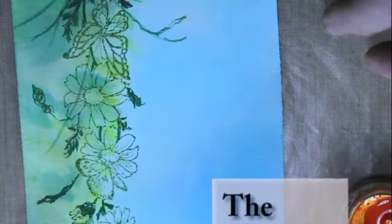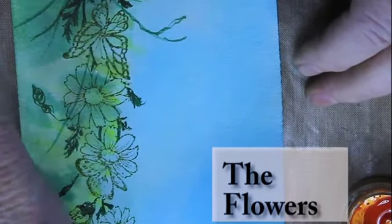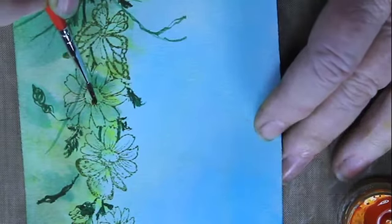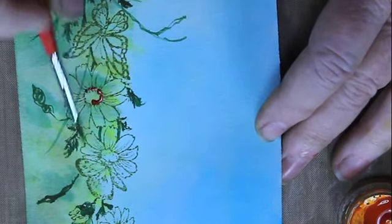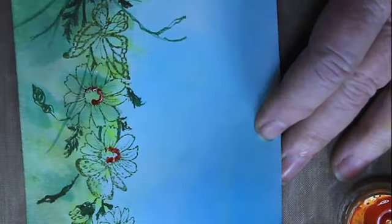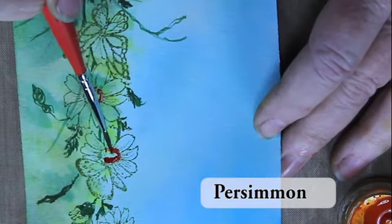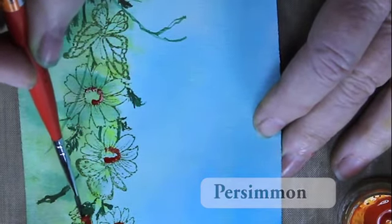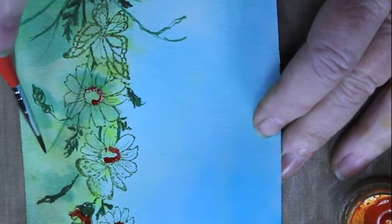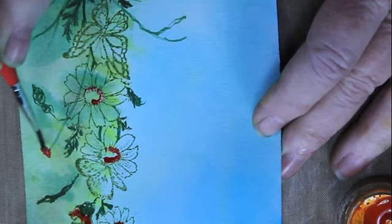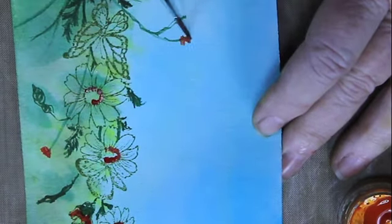All right, now we are ready to start painting the flowers and the butterflies. For the most part, I will be using twinkling h2o straight out of the pot. Now and again, I will put it on my craft sheet and add water to get the consistency that I need for that particular application.